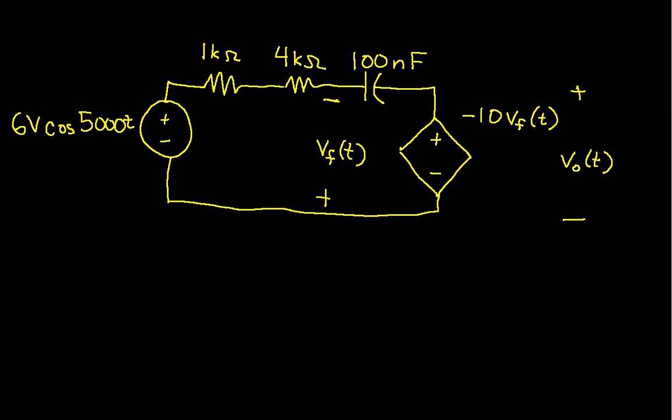So the first thing to do is to identify Omega. You can see here that Omega is 5000. And now we'll convert the voltages in the circuit to phasors. So this guy here, the source voltage becomes 6 volts at an angle of 0 degrees.